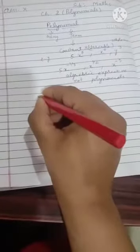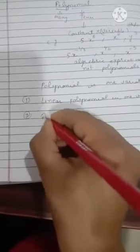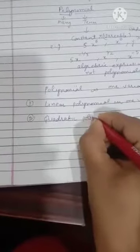Now we will see polynomial in one variable. In your class, we will consider only two types: first one is linear polynomial in one variable, the second one is quadratic polynomial in one variable.